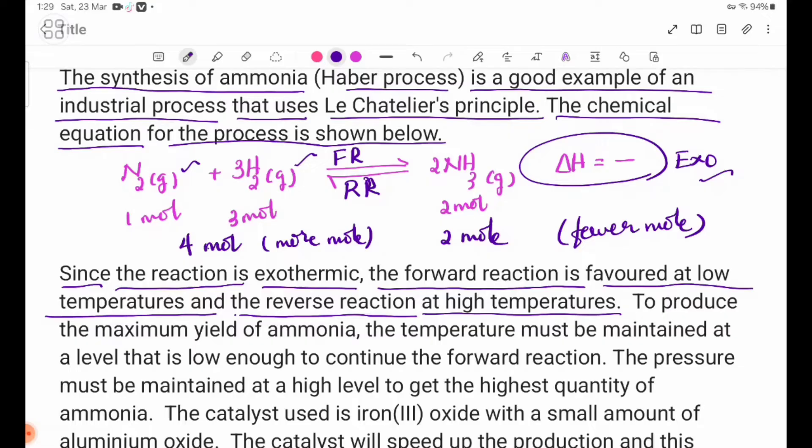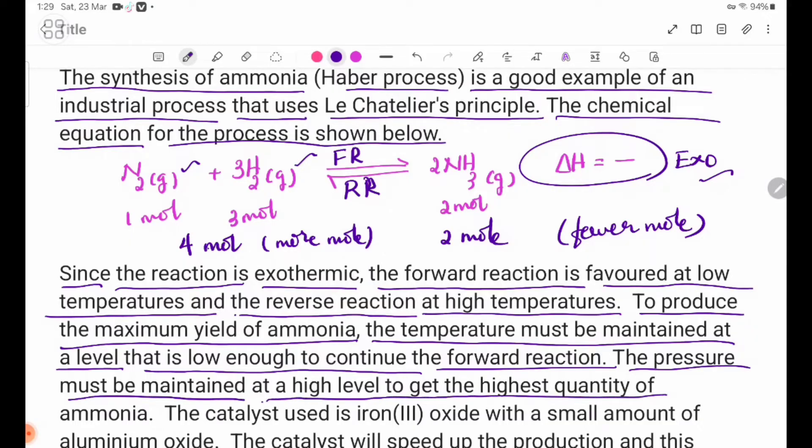To produce the maximum yield of ammonia, the temperature must be maintained at a level that is low enough to continue the forward reaction. The pressure must be maintained at a high level to get the highest quantity of ammonia.